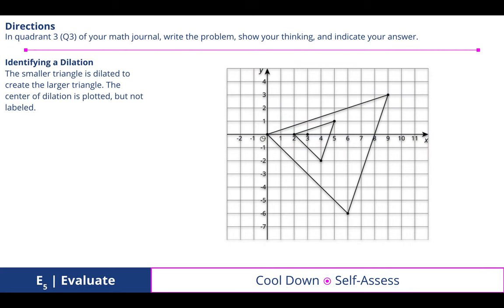In quadrant 3 of your math journal, write the problem, show your thinking, and indicate your answer. We worked through identifying this dilation. We first labeled the center of dilation at 3, 0. From that point of dilation to this vertex of the smaller triangle, it's only 1 unit. But the second triangle, which is larger, is 3 units away. So I had to multiply by 3 to get the new measurement, which means the scale factor is 3.